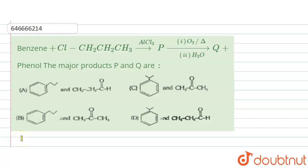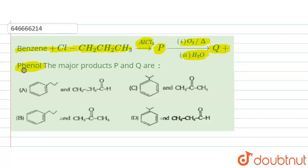The question is: benzene reacts with n-propyl chloride in the presence of aluminium chloride to give product P. Then with O2 by heating, then H2O, we get product Q and phenol. We want to find the major products P and Q.